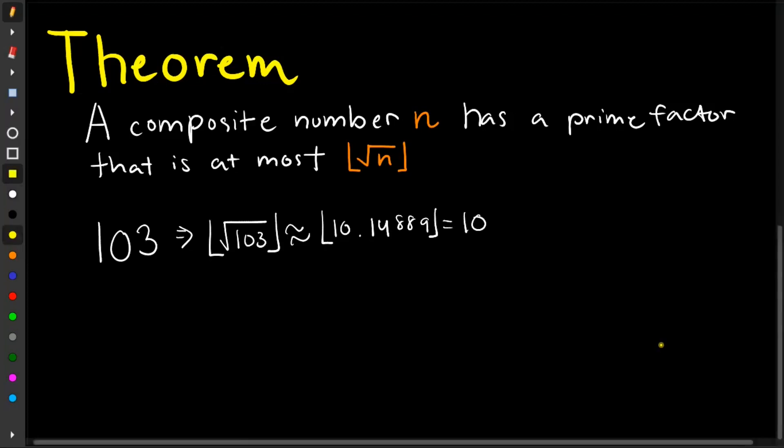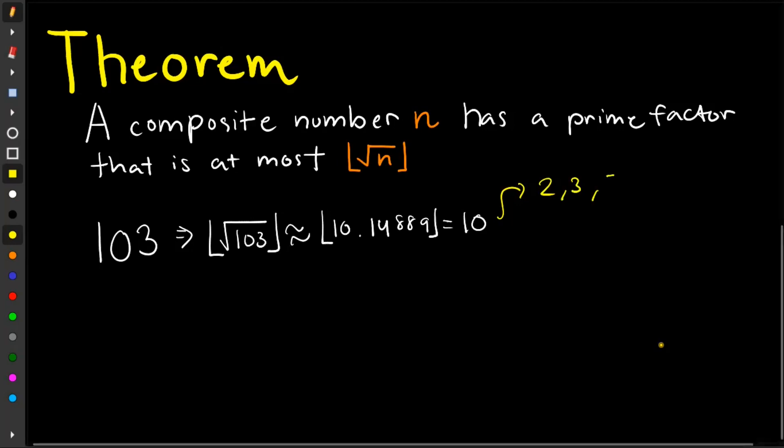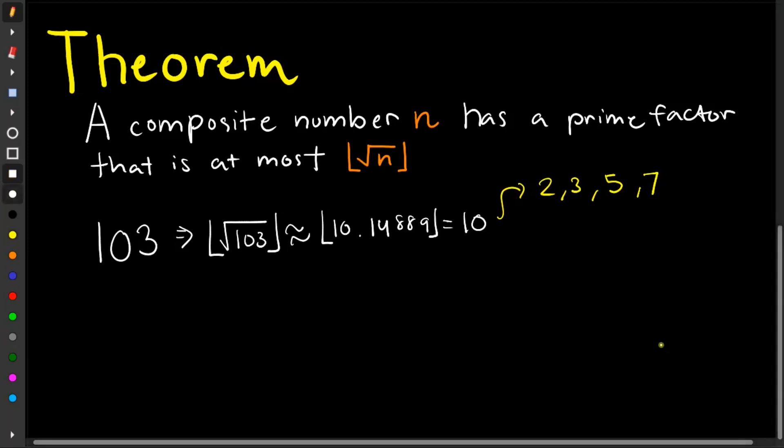we have square root of 103, is approximately 10.14889, which is equal to 10. So we check the primes 2, 3, 5, and 7. So clearly, this number is not divisible by 2, since it is not even, it is odd. 3 as well, since 1 plus 0 plus 3 gives 4, which is not divisible by 3. Since it ends in 3, not in 0 or 5, then it is not divisible by 5.